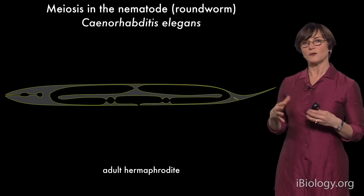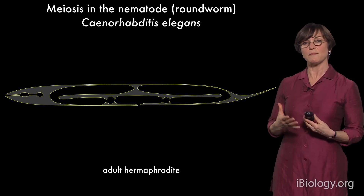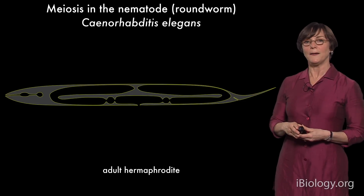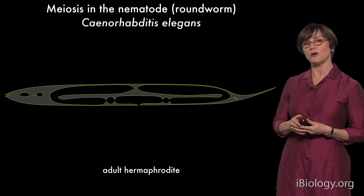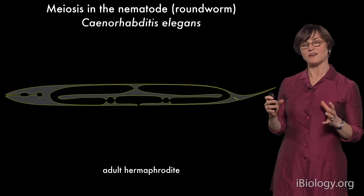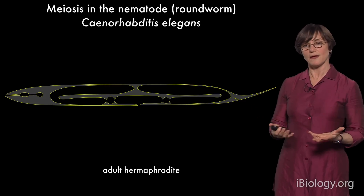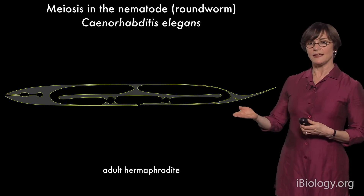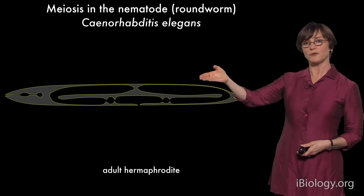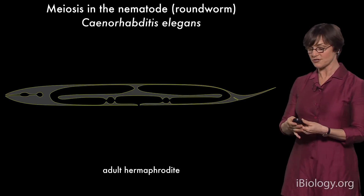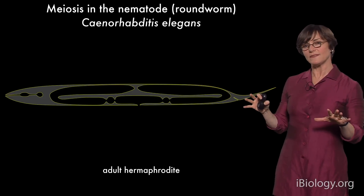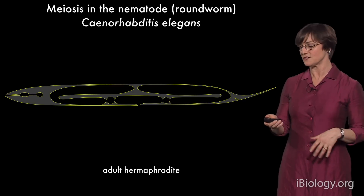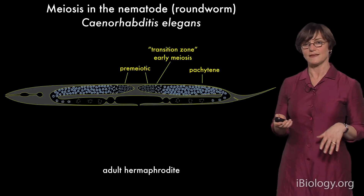C. elegans are about a millimeter long. In a wild population, most animals are hermaphrodites — they make both eggs and sperm and fertilize their own eggs. Most of the interior of an adult animal is actually the germline, the tissue giving rise to meiotic nuclei and eventually to progeny. The germline is organized within two arms of the gonad in a horseshoe-like structure, and the gonad contains a complete gradient of meiotic stages — making it very clear where each event is happening.